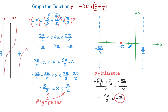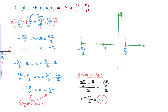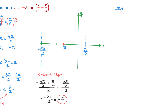Once we have the x-intercept, halfway to the right between the x-intercept and the vertical asymptote, the value of the function will be negative 2, because of the negative 2 in front of the tangent. Halfway to the left, the value will be the opposite, positive 2. To find the x-coordinate halfway to the right, we add negative pi and pi over 2 and divide by 2. Negative pi plus pi over 2 is negative pi over 2, and negative pi over 2 divided by 2 is negative pi over 4.